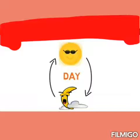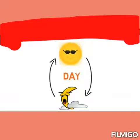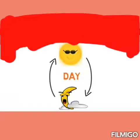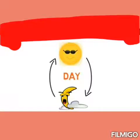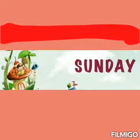दिन की शुरुवात हम कैसे करते हैं? जब हमारा sun निकलता है, morning होता है, वहीं से हमारे दिन की शुरुवात होती है। और जब moon निकलता है तब night हो जाता है। तो sun से moon तक का जो समय होता है, वो हमारा day होता है — morning से night। उसके बीच में जितना भी काम करते हैं वो एक day में करते हैं। अब हमारे week में कितने day होते हैं, यह हम discuss करेंगे।